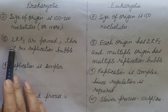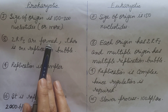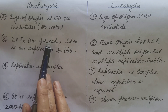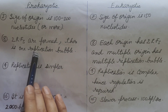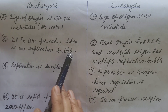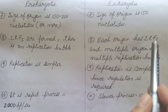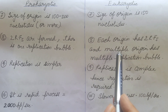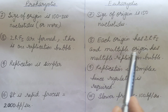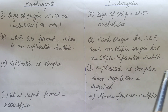In prokaryotes, two replication forks are formed as the double strand of DNA separates at the origin, and hence there is one replication bubble. In eukaryotes, each origin has two replication forks, and since there are multiple origins, there are multiple replication bubbles.